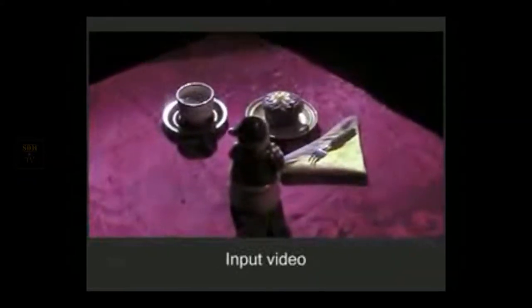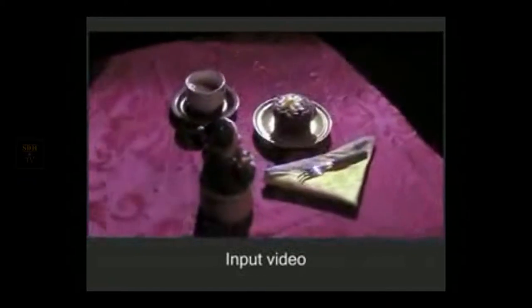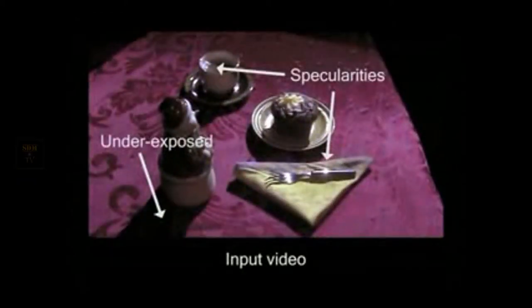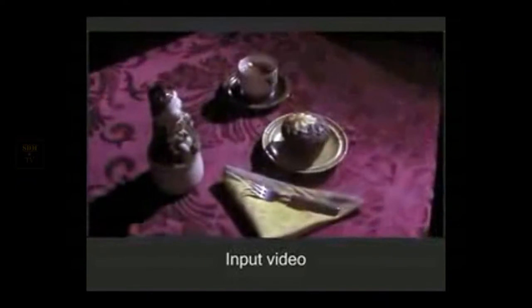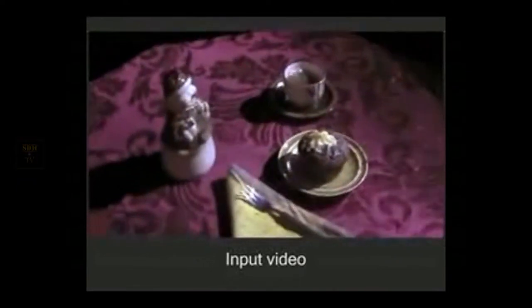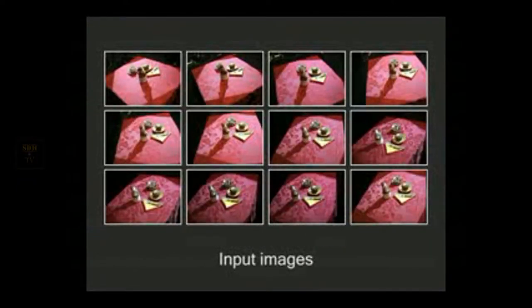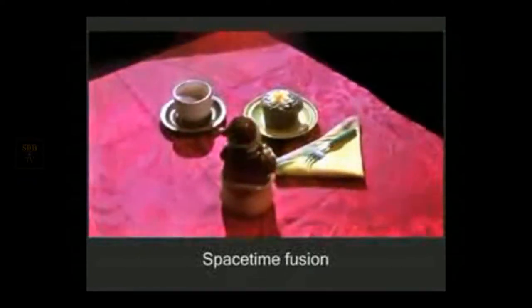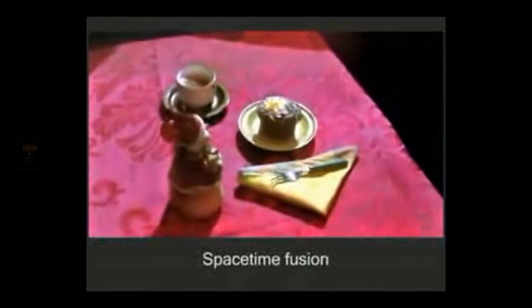In the next example, we demonstrate the ability of our space-time fusion algorithm to transfer dynamic lighting from an input video to a video reconstructed from photographs. Our scene is captured at night on a rainy day. Notice the shadows and caustics from the raindrops cast from a nearby window and the specularities on the fork. Several photographs of the scene were also taken with long exposure times. Our system produces a well-exposed video while preserving the dynamic lighting of the scene.